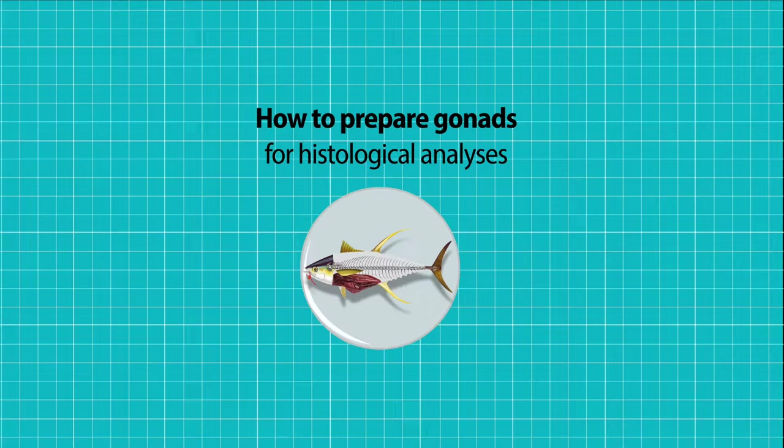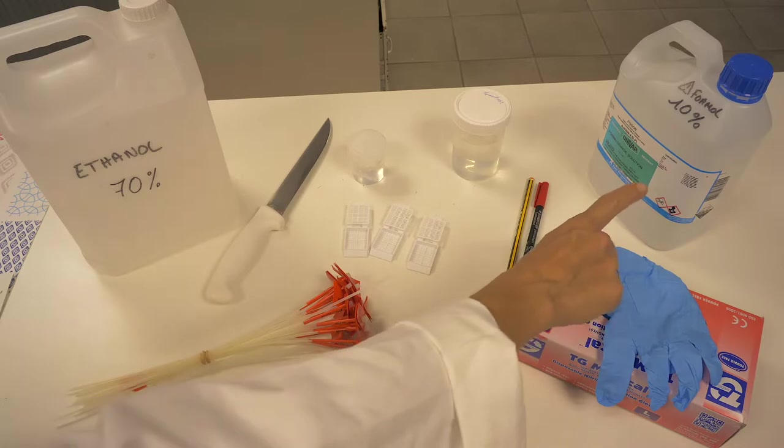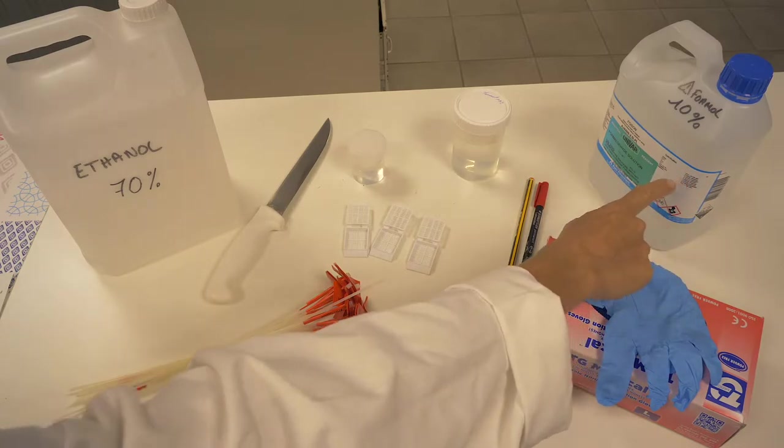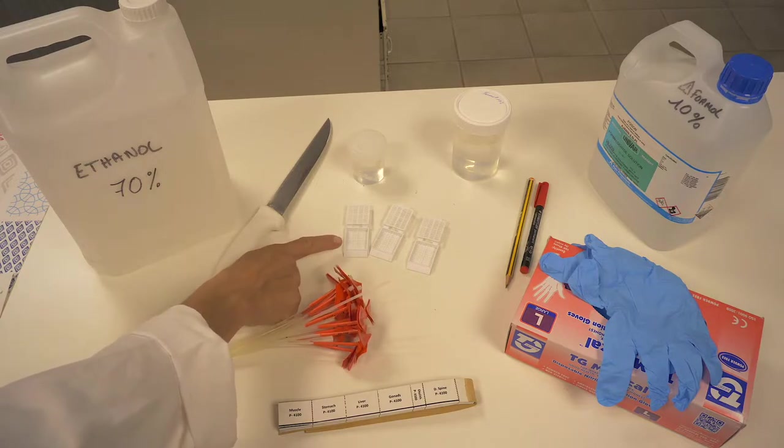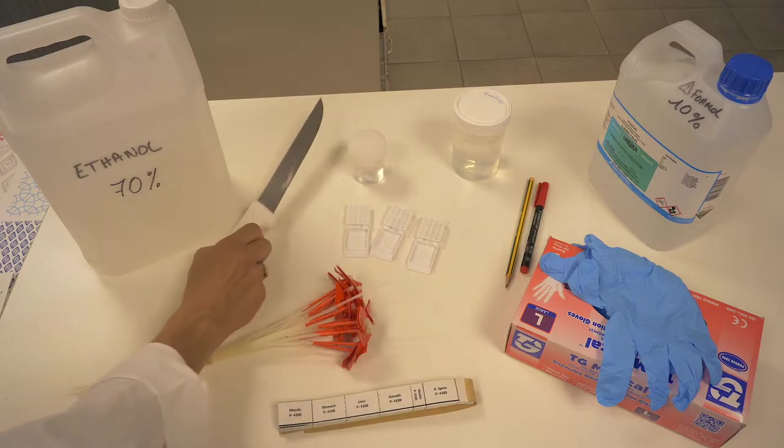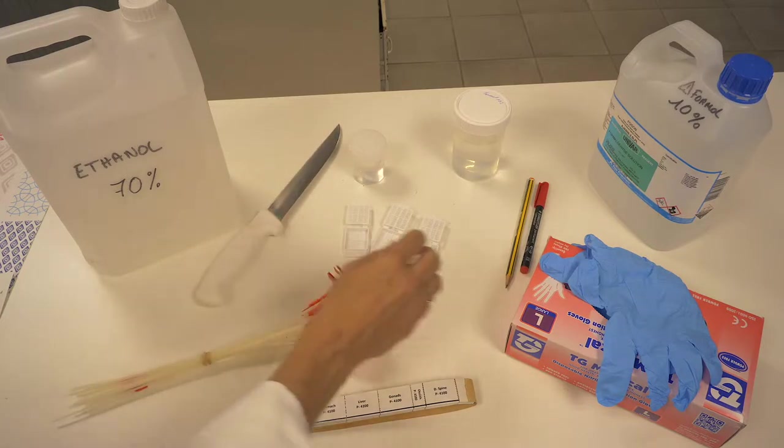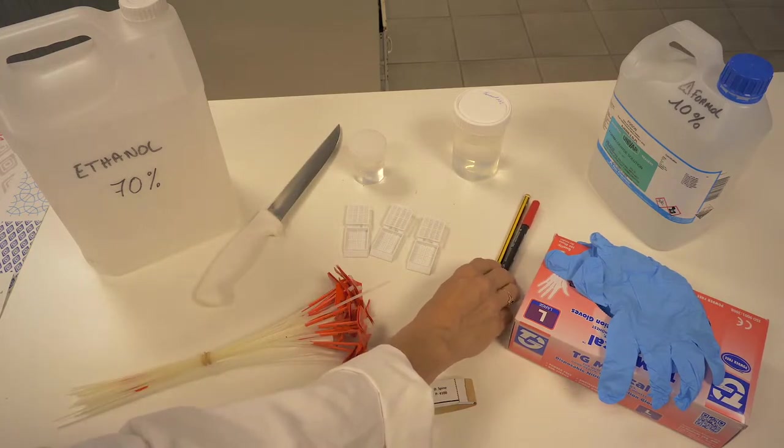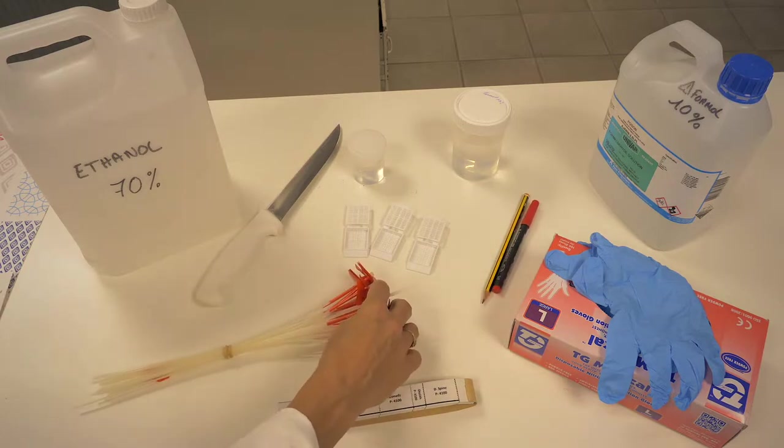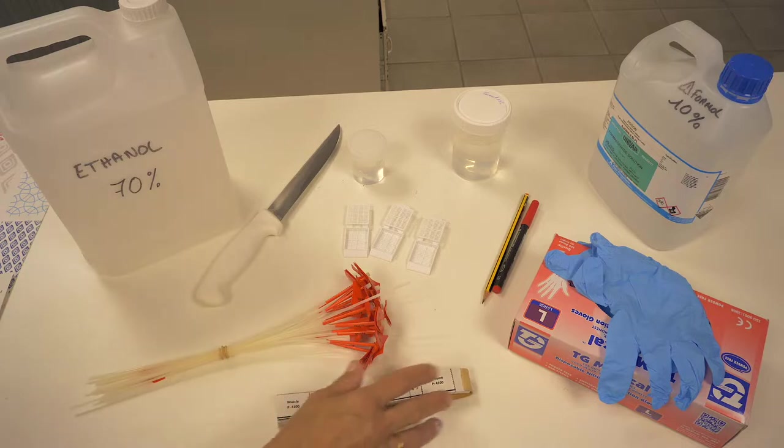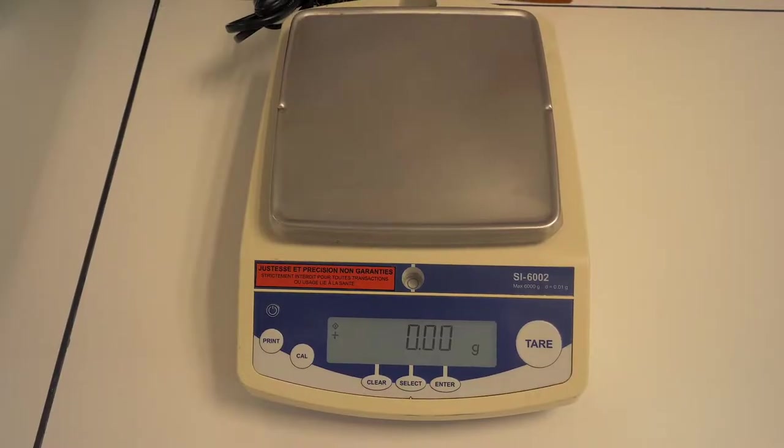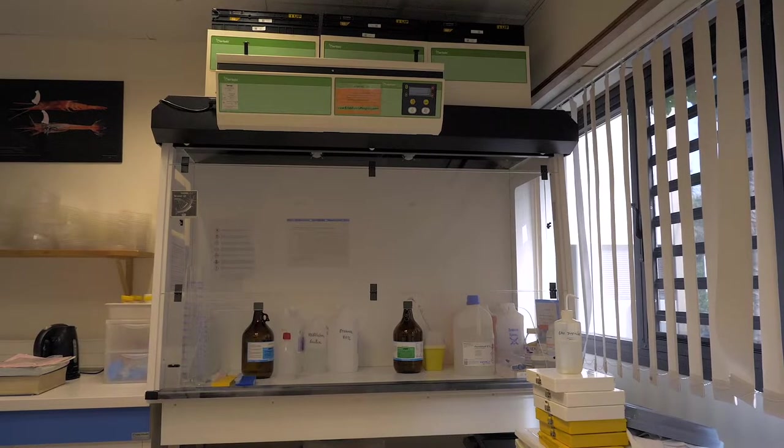Today, we're going to learn how to prepare gonads for histological analysis. We're going to need 10% formalin solution, 70% ethanol for long-term storage, cassettes, vials of different sizes, a knife, a pencil and a permanent pen, labels (it can be cable tie labels or other type of labels), gloves, a weighing scale, and an extractor or a fume hood.